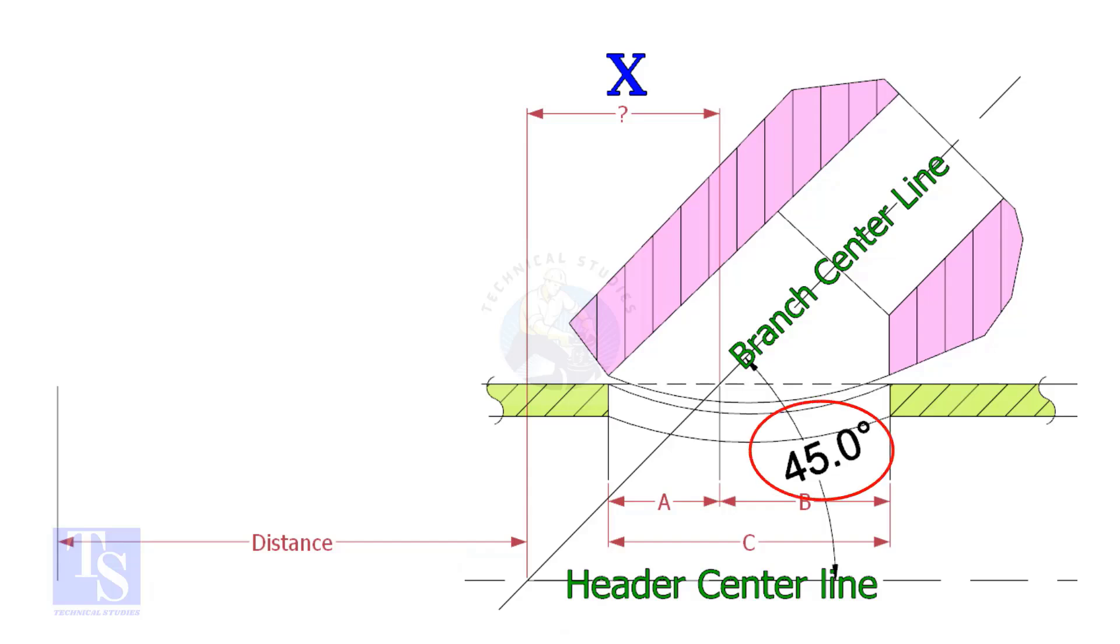If the including angle is 45 degrees, the value of X will always be half OD of the header. Suppose the OD of the header is 400 mm, then the value of X will be 200 mm.